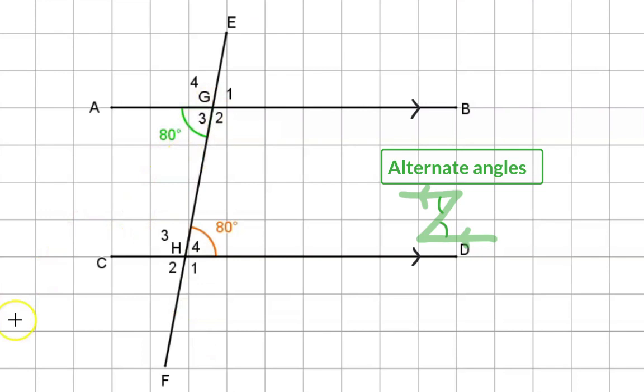In the given sketch we can connect angle G3 with angle H4 using such a Z, so these two angles are equal. And just like with our corresponding angles this N or Z can be flipped around and stretched. So in our sketch we can form another Z which connects G2 with H3 and now we know that these two angles will also be equal.